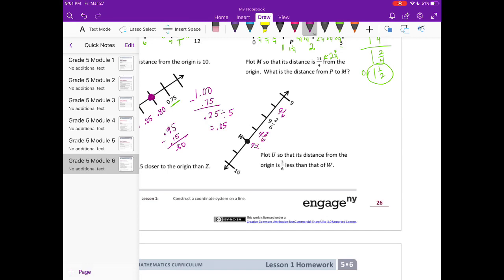9 and 3 sixths, 9 and 4 sixths, 9 and 5 sixths. So we're looking for something that's 3 sixths less than W. So 9 and 4 sixths minus 3 sixths, because we're looking for 3 sixths less than W, would be 9 and 1 sixth. So our point's going to go right there. There's U.